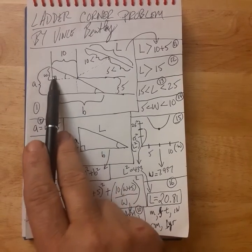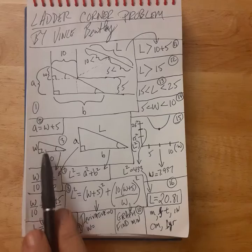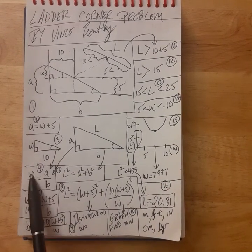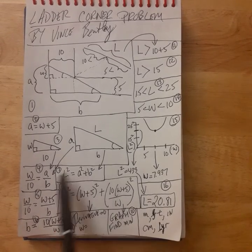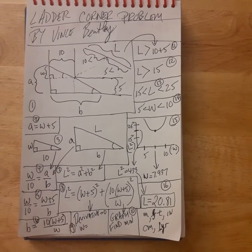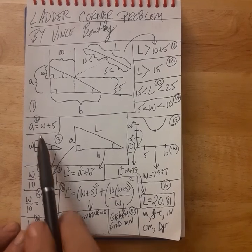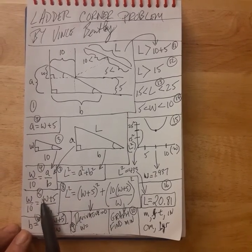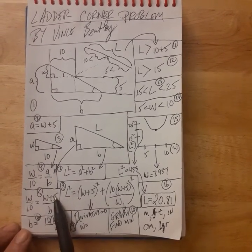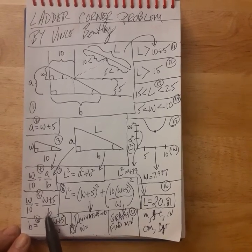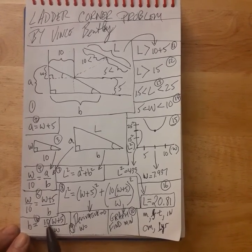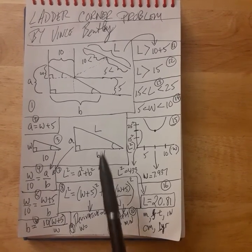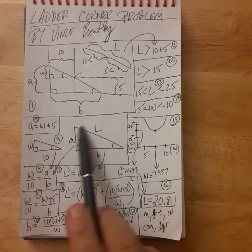Starting with our equations: a equals w plus 5, because if that side is 5, then a covers w plus that 5. Looking at the small triangle, the length of 10 is one side. Using similar triangles, the two angles are equal, meaning sides are proportional: w over 10 equals a over b. Substituting a = w + 5, we can solve for b, giving b equals 10(w + 5) divided by w.